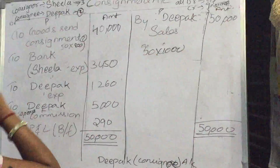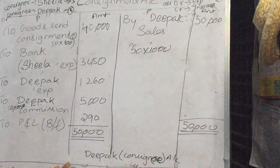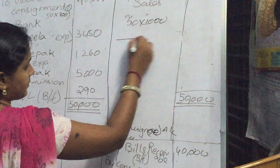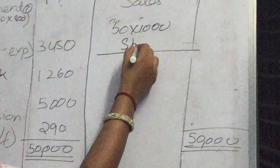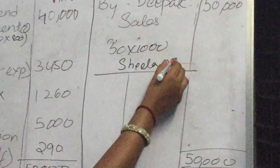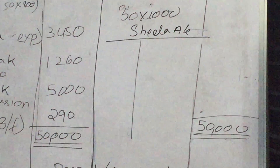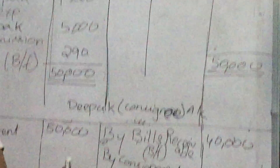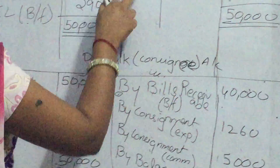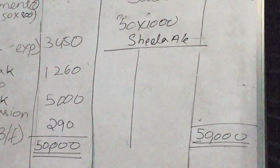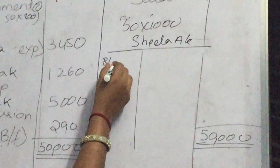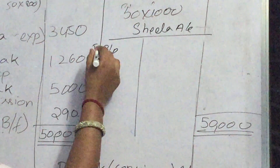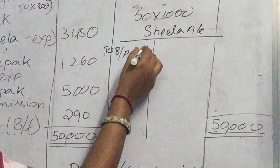And in the books of Deepak — who is Deepak? Consignee — only one account. What is that account? Consignment account — that is Sheila's account. The Sheila account is the same as the consignment account. Whatever is on the debit side or credit side, you should transfer accordingly. First one is bills receivable, so here you should write bills payable — same amount.